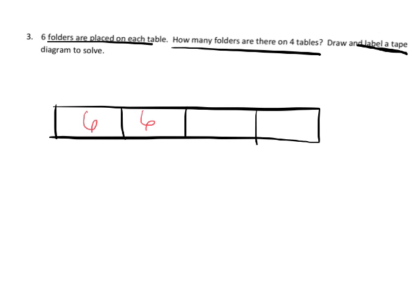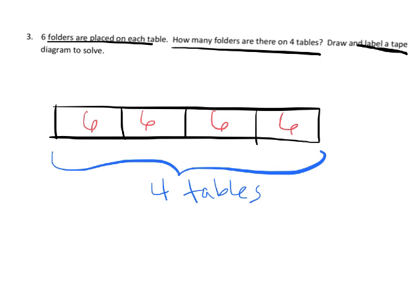And then up here we'd say six folders per table - that's one way to do it. All together, we can see that we have 24 folders.